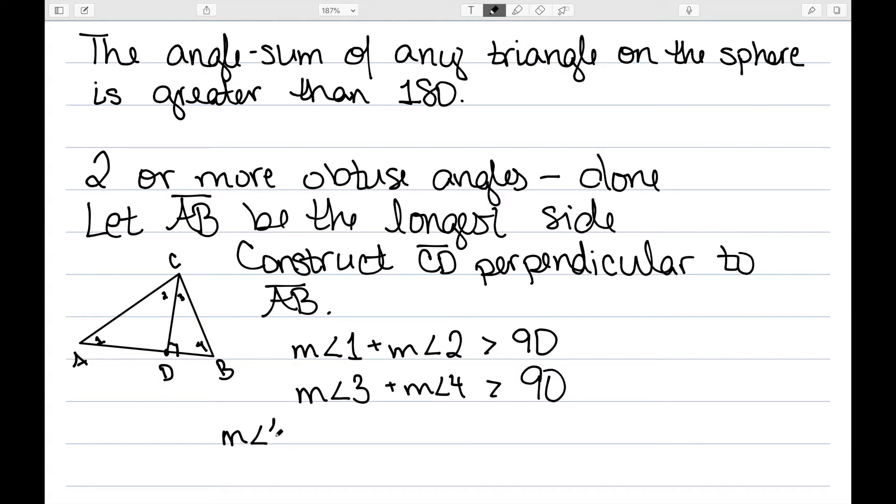Adding these up, I would have the measure of angle one plus two plus three plus four to be greater than 180. The measure of angle one is the same as angle A. Two plus three is the same as the measure of angle C. And four is the same as the measure of angle B. So I have that if I add up the three angles of my original triangle, I get something bigger than 180.